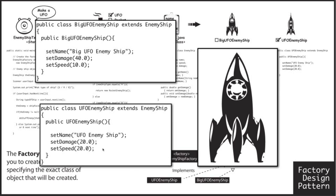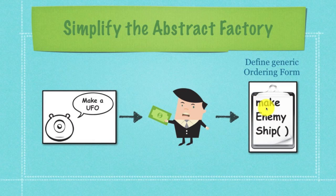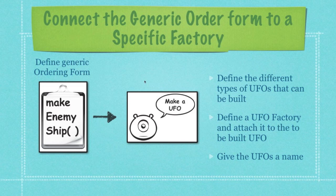Now let's look at how a factory pattern differs from an abstract factory pattern. In this situation, we're going to abstract everything out — even the ordering process. Whenever our alien says 'I want you to make me a UFO,' think of there being a salesman. The salesman's only job is to take the order; he doesn't care about the specifics of the ship, he just wants the sale. So what he is going to do, as a sort of middleman, is define a generic ordering form. This is going to be an abstract class, and the only requirement is that it contain a method called make enemy ship.